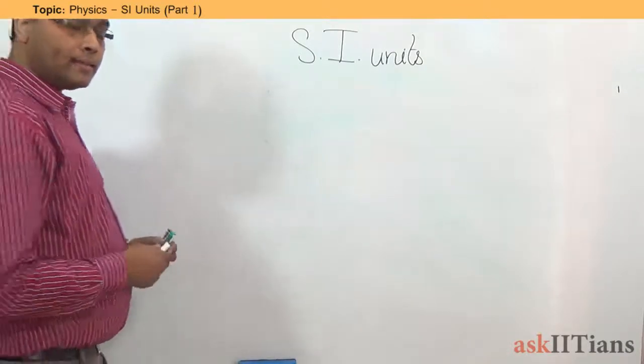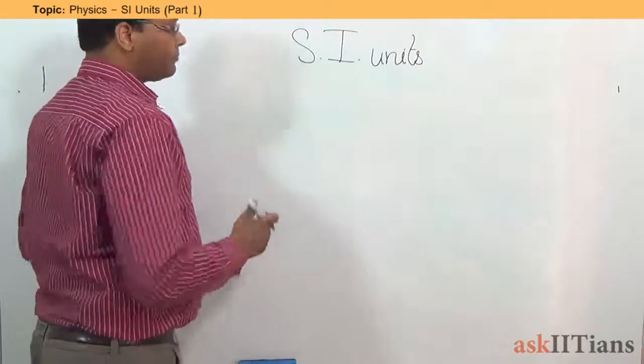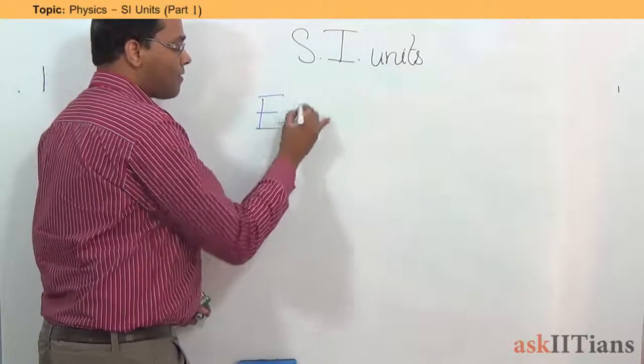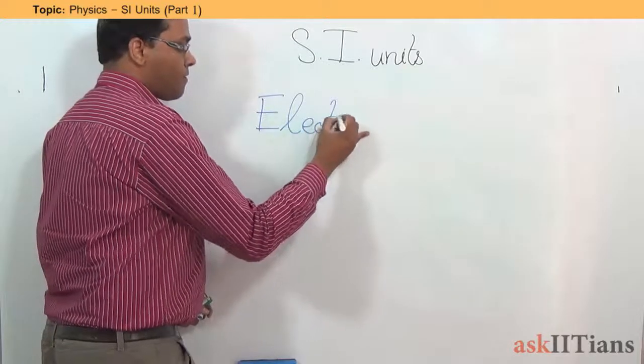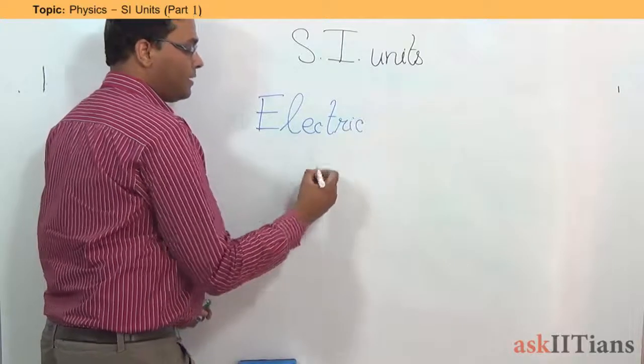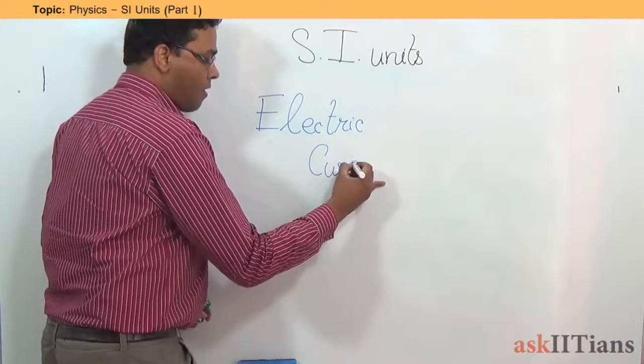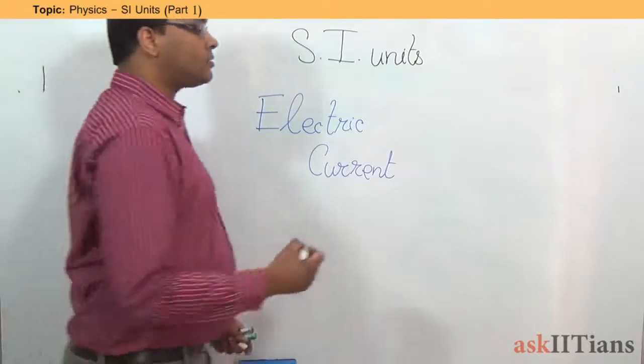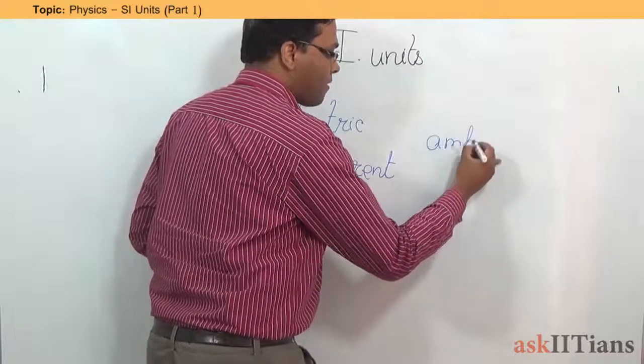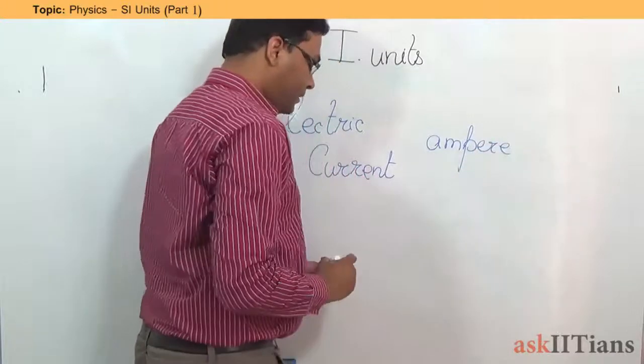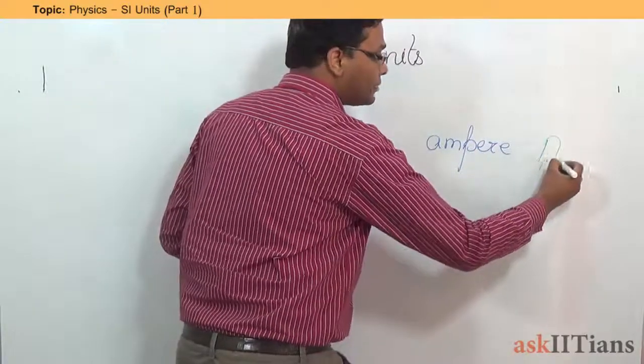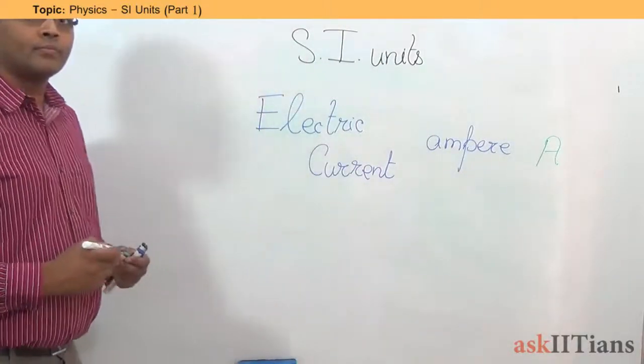The next one is, you will be studying it later on. Some of you would have already studied. It is electric current. This is going to be measured in ampere. And the way you are going to denote it is going to be A.